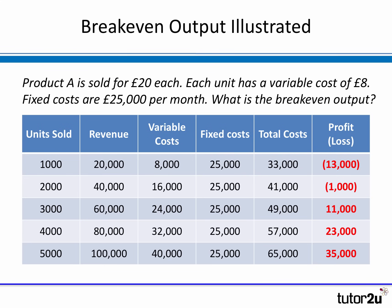At 1,000 units sold we make a loss of £13,000 because our revenue of £20,000 was not enough to cover total costs of £33,000 — we have not yet broken even. At 2,000 units we've made a loss of £1,000, so we're still not quite at break-even output. However, at 3,000, 4,000, and 5,000 units we have started to generate a profit, which means we have exceeded the break-even output.